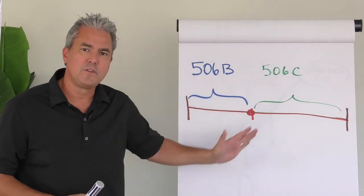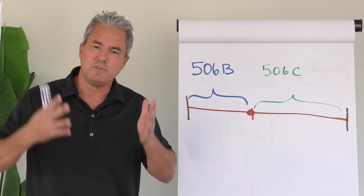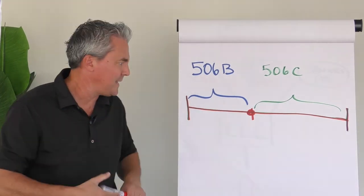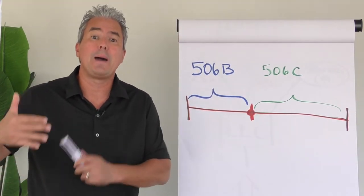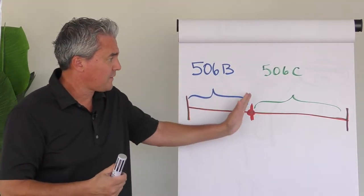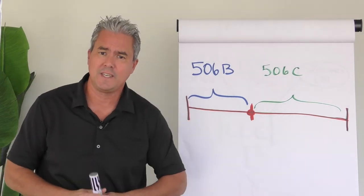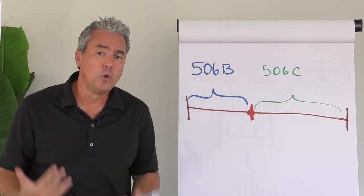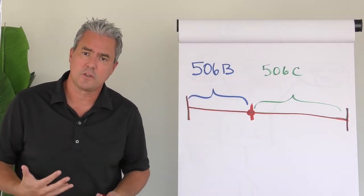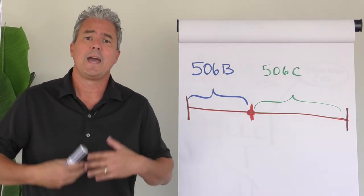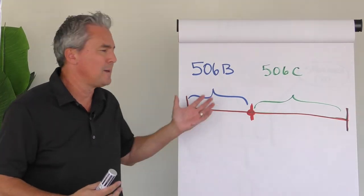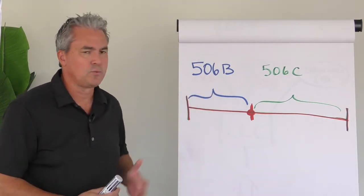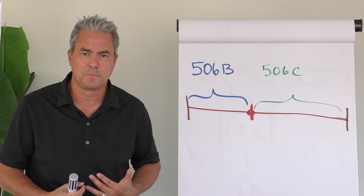And then at some point in the middle of the raise, you make the determination that I'm done with 506B, I terminate it, and I mean terminate that offering. And then from that point forward, you start complying fully with 506C, meaning you're only going to accept accredited investors moving forward, and you're going to take reasonable steps to verify that those investors are in fact accredited. You're not going to be able to take their word for it or just rely on a questionnaire like we do with 506B.